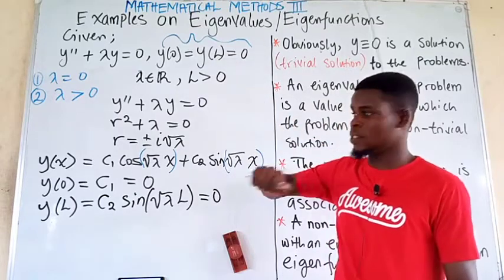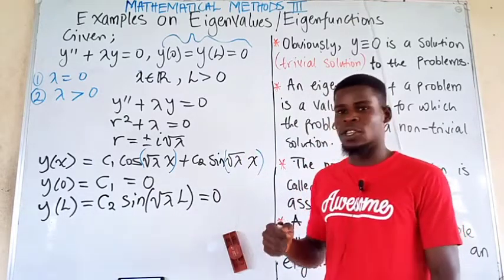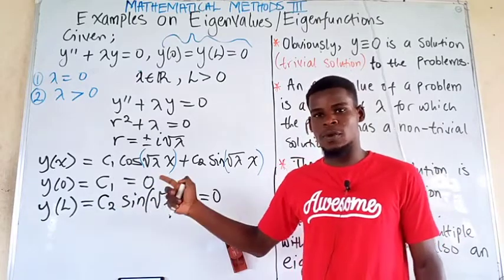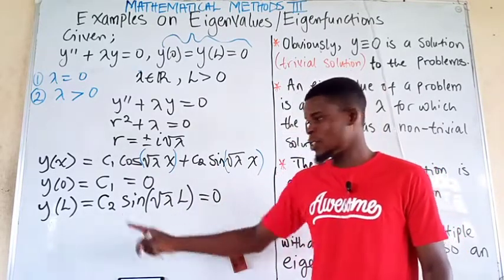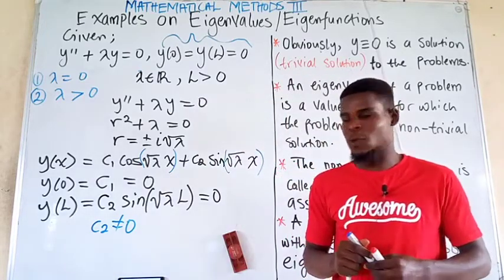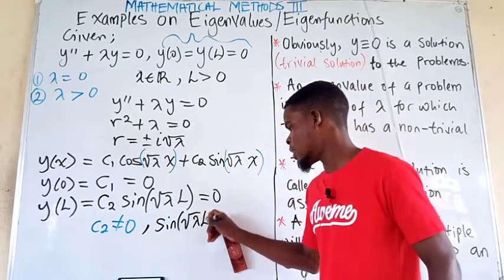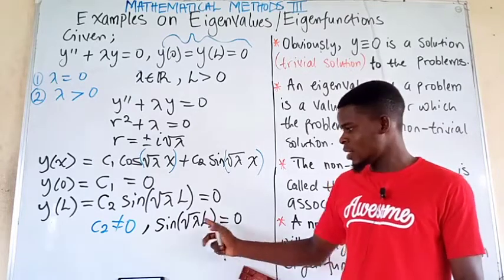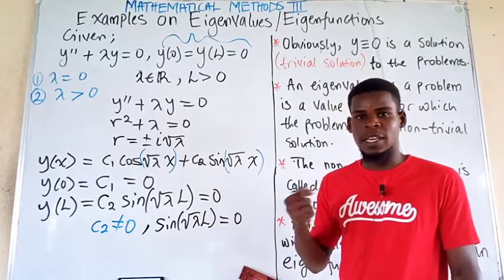Here is the key: since c₁ = 0, if c₂ is also zero we get a trivial solution again. To avoid this, we require c₂ ≠ 0. This means the other factor must be zero: sin(√λ · l) = 0. Our goal is to find the values of lambda that satisfy this equation.